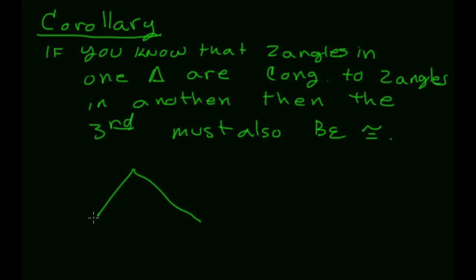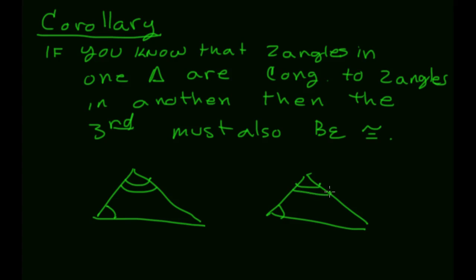Here's why: if two angles in one triangle match two angles in another, both triangles still have to add up to 180. So if you subtract those same two angle measures from 180 in each triangle, the remainders — the third angles — must be equal. Those two angles will necessarily be congruent because you took away the same amount from 180 in both triangles.